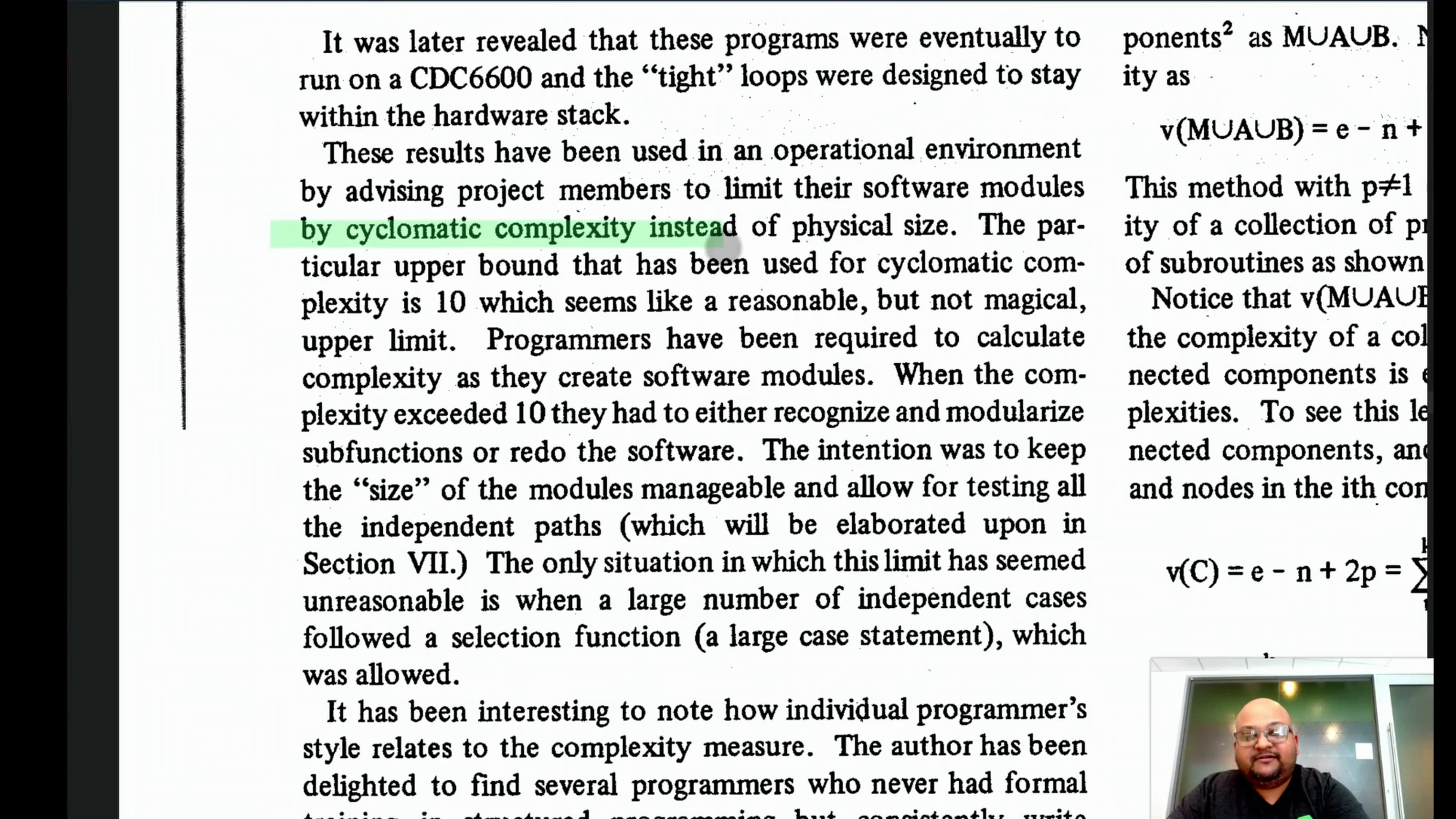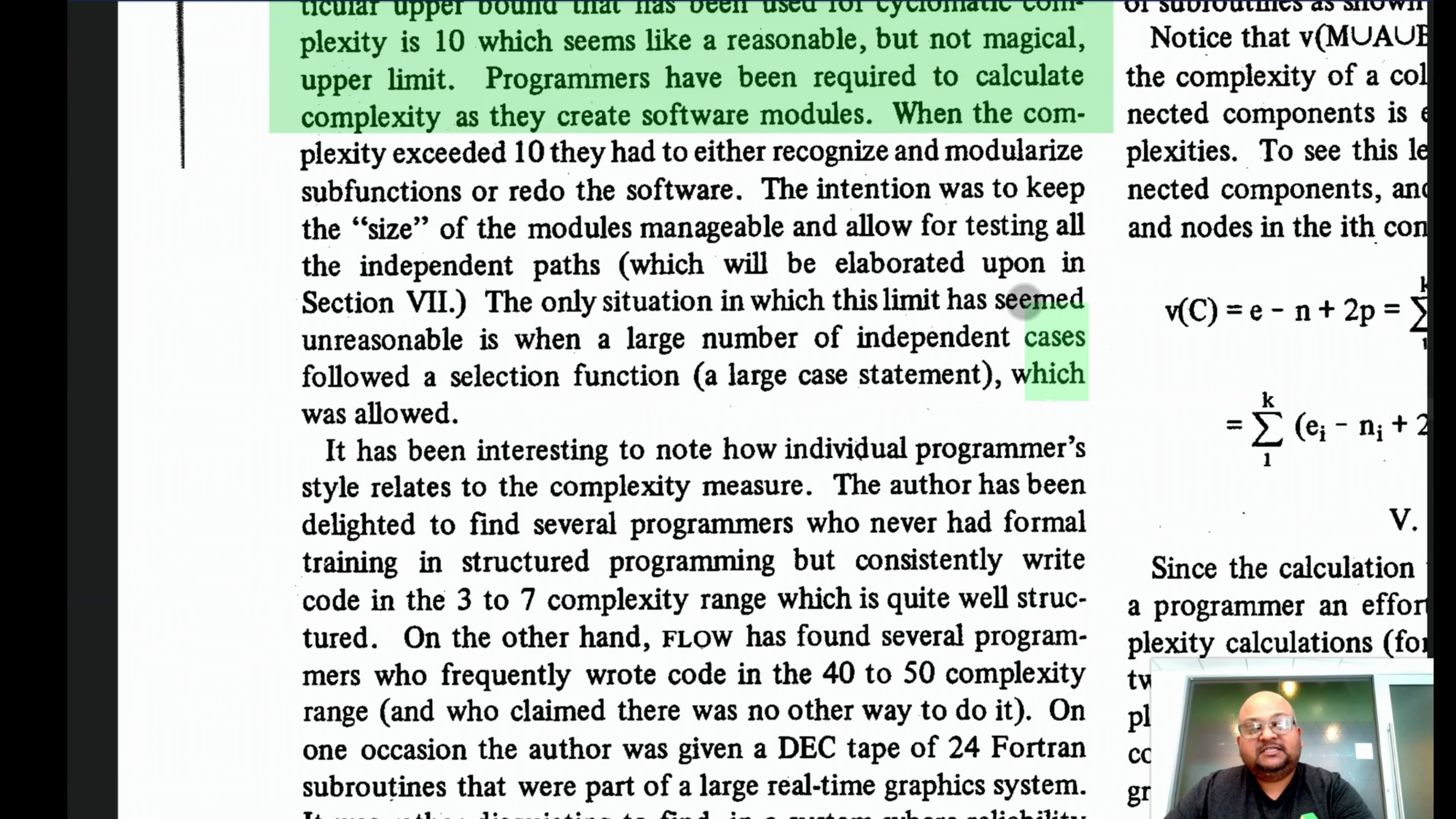Based on his own experience, the author suggests using 10 as an upper bound for cyclomatic complexity. And you'll find this bound used in many modern programs as well that report on cyclomatic complexity within a code base. One very notable exception to this is code which uses a very large switch case statement.